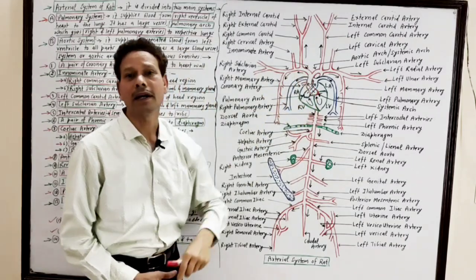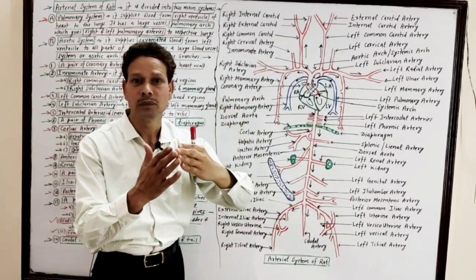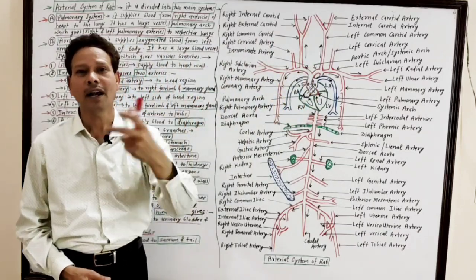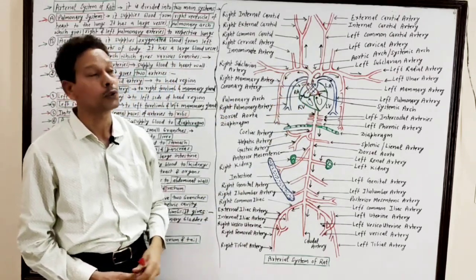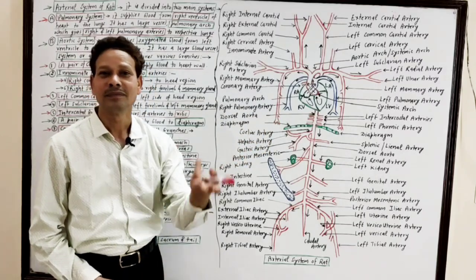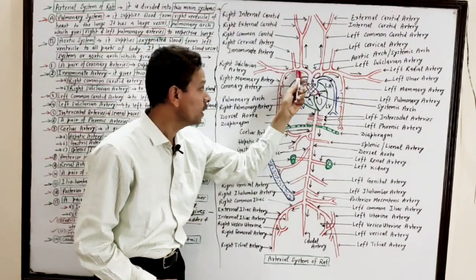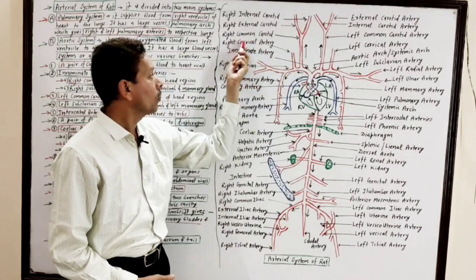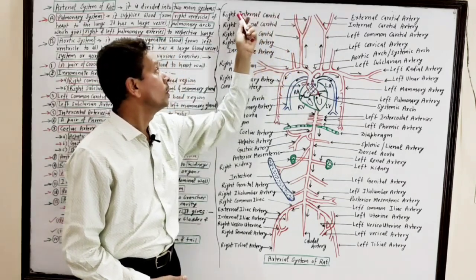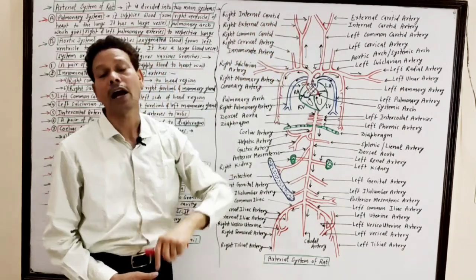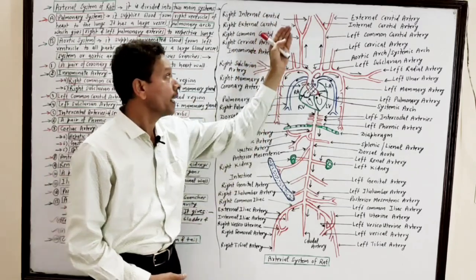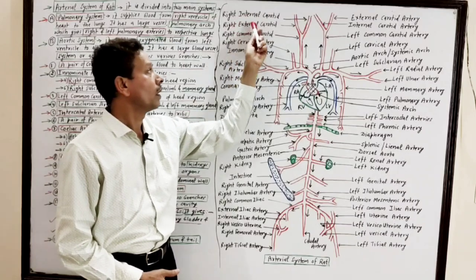The aortic arc gives a pair of coronary arteries to the heart wall. Then on the right side, the innominate artery supplies oxygenated blood to the head region, neck region, forelimbs, and the right side of mammary glands. The innominate artery divides into the right common carotid artery, which carries oxygenated blood to the head region, further dividing into right internal and right external carotid arteries to supply the internal and external parts of the head region.